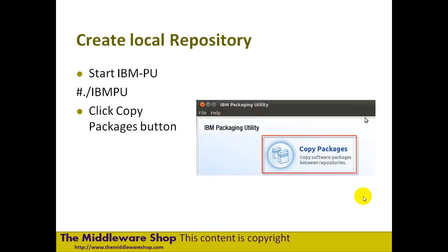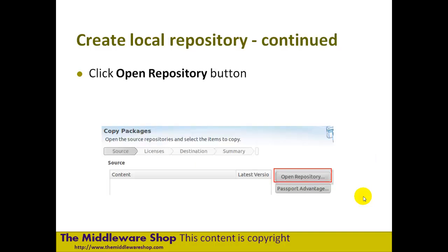Then we start the IBM Packaging Utility. The reason we do this is we want to go and get a remote repository, download its contents, and create a local repository which we can use for our installation recording. We can also send or copy this repository to our production server before we do the real installation. We launch the IBM Packaging Utility and our workspace loads — it's all based on Eclipse, like all these tools, so you get a workspace and some buttons. Click on Copy Packages and you'll be asked to configure the location of a repository. You can also get to the same options via the File menu.